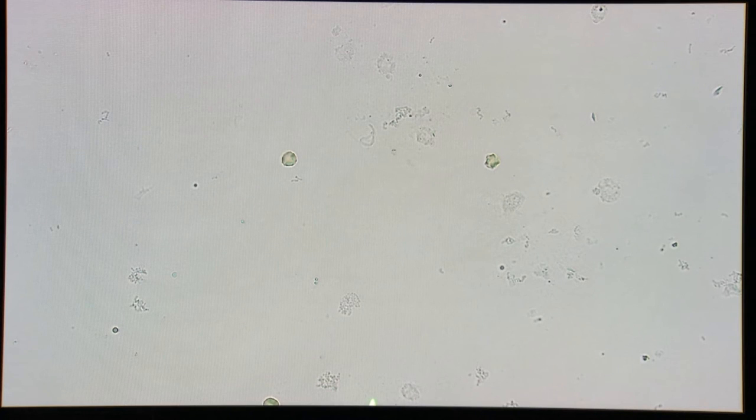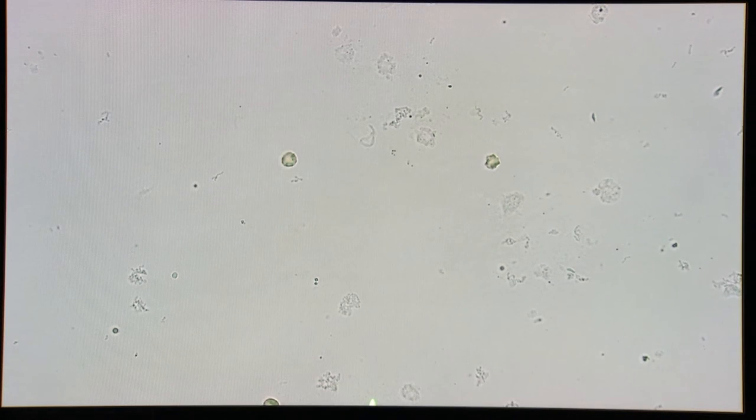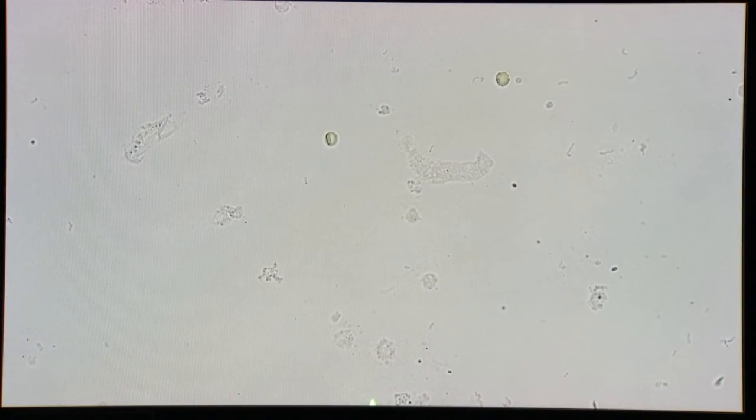For cells, you count what you see in approximately 5 to 10 fields and take the average.